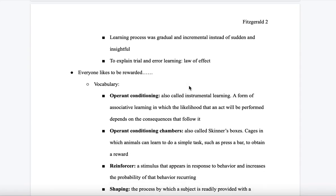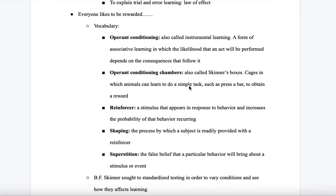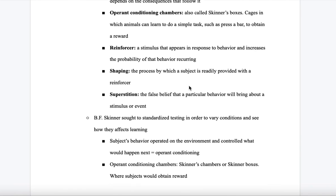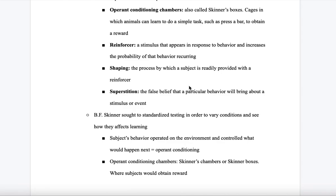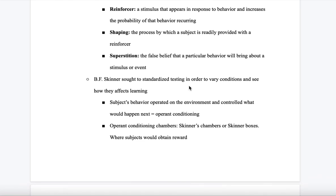The next subsection is about everyone liking being rewarded. Vocabulary includes: operant conditioning, also called instrumental learning, a form of associative learning in which the likelihood that an act will be performed depends on the consequences that follow it; an operant conditioning chamber, also called Skinner's box, a cage in which animals can learn to do a simple task such as press a bar to obtain a reward; a reinforcer, a stimulus that appears in response to behavior and increases the probability of that behavior reoccurring; shaping, the process by which a subject is readily provided with a reinforcer; and superstition, the false belief that a particular behavior will bring about a stimulus or event.